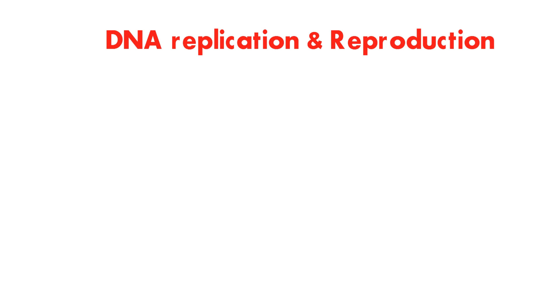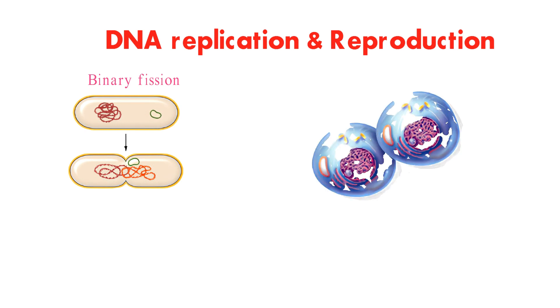Prokaryotic cells replicate their DNA through a process called binary fission. Eukaryotic cells replicate their DNA through a process called mitosis.